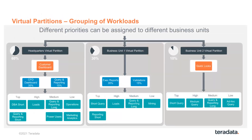You can add another level at the top of your hierarchy, which is what we call virtual partitions. For instance, you might have your headquarters business and then two business units that are important, but you want to control how much resources they're allocated and make sure that your headquarters gets the majority of resources.